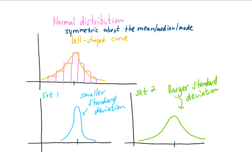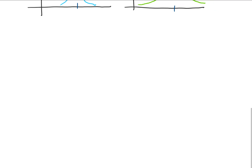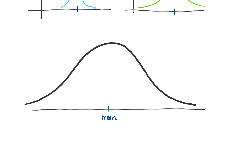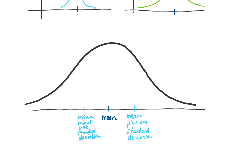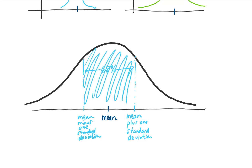The cool thing about normal distributions is, regardless of what the mean is and regardless of what the standard deviation is, we can say a lot of things about the data. Here's a bell-shaped graph. Our mean is right here in the middle. Right here is going to be the mean plus one standard deviation, and over here is going to be the mean minus one standard deviation. Regardless of the actual values, we can say that for a normal distribution, 68% of our data is going to fall right in between those two values.